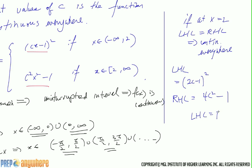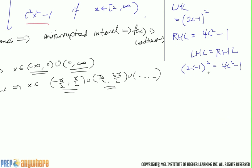So as long as this is good, meaning two c minus one squared is equal to four c squared minus one. Our limit exists everywhere. It's continuous everywhere, right?